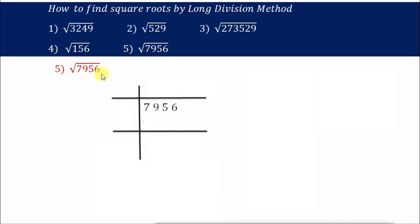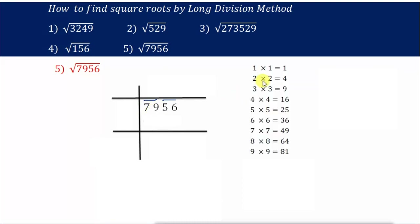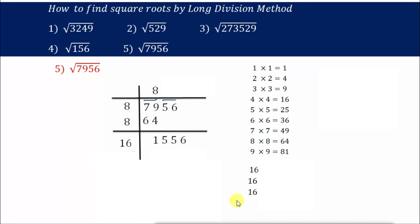Next: root of 7956. Take 7956 and start grouping from the right-hand side in pairs — we get two perfect pairs. The first number we have is 79. We check which number is nearest to 79: 81 is greater than 79, so we cannot use it. We go with 8×8=64.